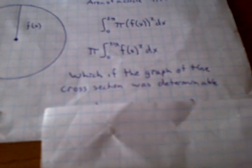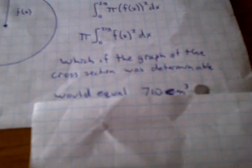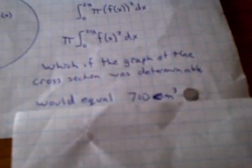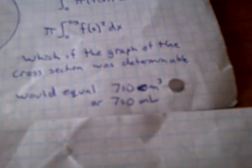So if the graph cross section was determinable, it would be about 710 cm cubed, or 710 ml, which is basically the same thing. And I know that because I read this off the water bottle before I cut off the label.